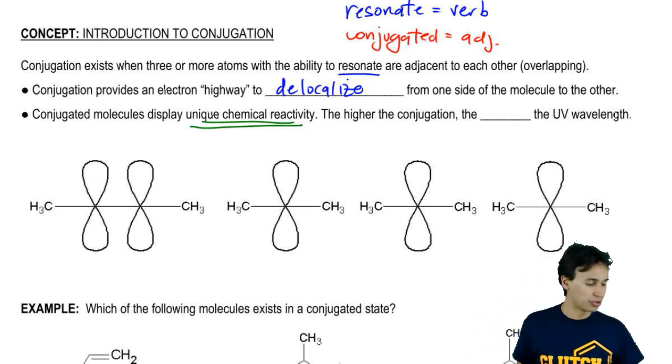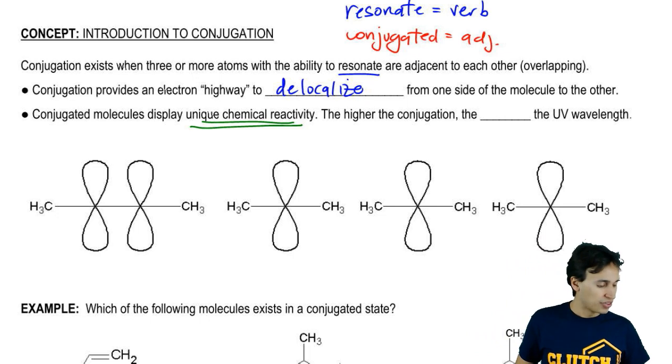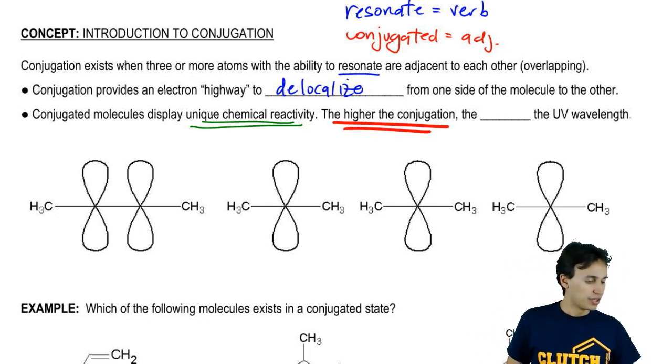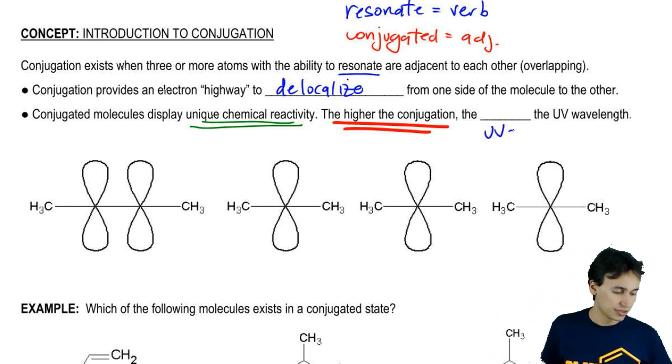In another note that's pretty much unrelated to everything I just said, there's an important side note for you to know, which is that the higher the level of conjugation in a molecule, the higher the UV wavelength is going to be in a UV-vis spectrometer.